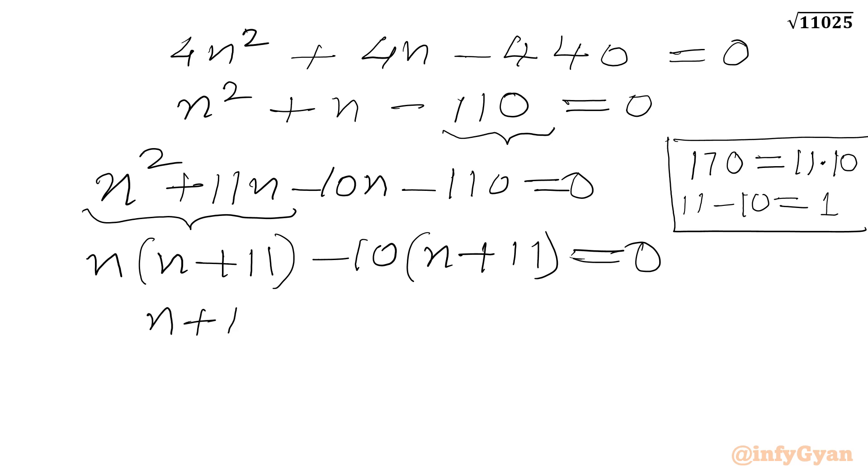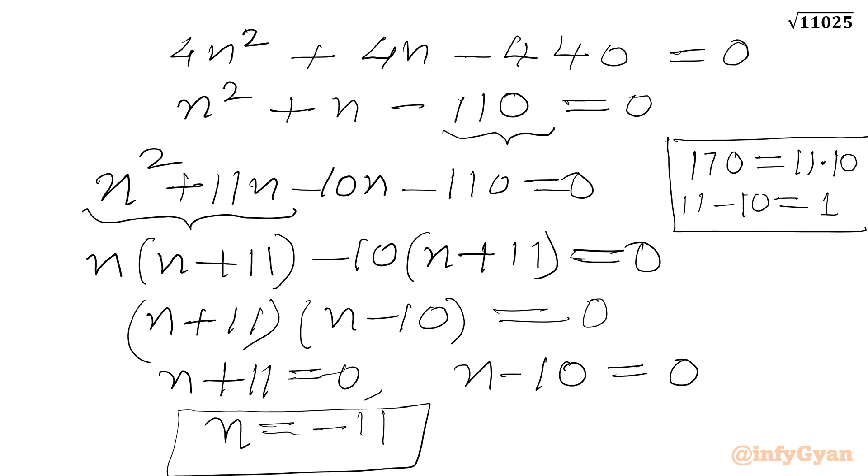Now I can take n plus 11 overall common. Then in the other bracket we will get n minus 10 equal to 0. So from here I can write n plus 11 equal to 0, or n minus 10 equal to 0. So from first equation we will get n equal to negative 11. And from second n equal to 10.